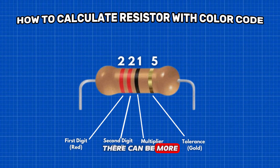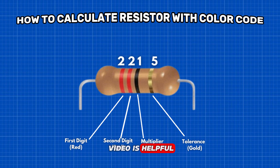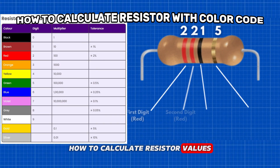There can be more than two such bands. I hope this video is helpful, and I hope you now know how to calculate resistor values.